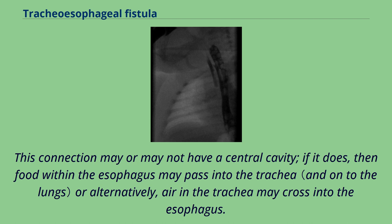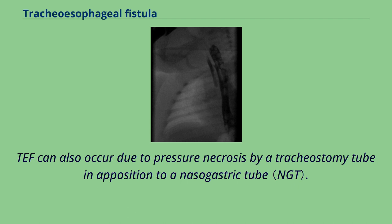This connection may or may not have a central cavity. If it does, then food within the esophagus may pass into the trachea, or alternatively, air in the trachea may cross into the esophagus. TEF can also occur due to pressure necrosis by a tracheostomy tube in apposition to a nasogastric tube.